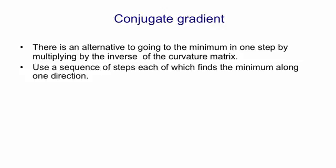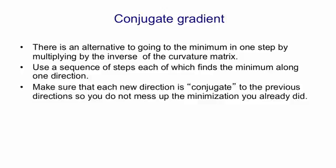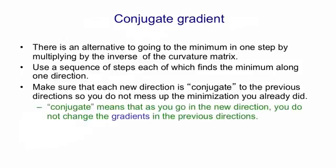Once it's done that, it now finds another direction and goes to the minimum in that second direction. The clever thing about the technique is it chooses its second direction in such a way that it doesn't mess up the minimization it already did in the first direction. That's called a conjugate direction. Conjugate means that as you go in the new direction, you don't change the gradients in the previous directions.